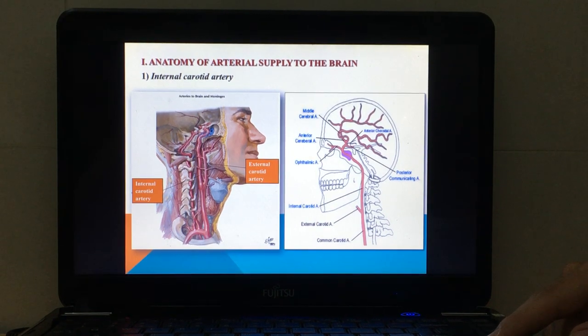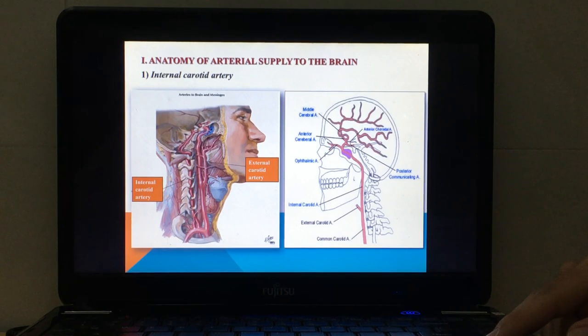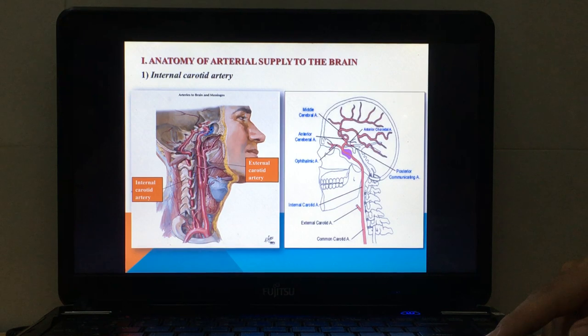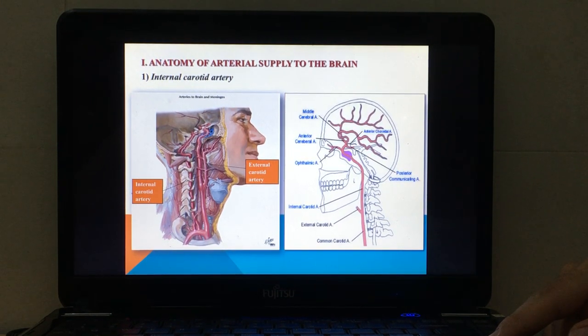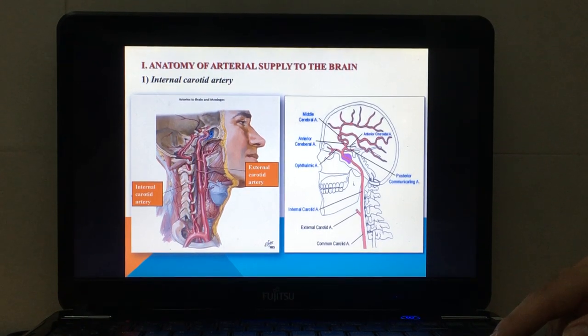These branches are the anterior cerebral artery, the middle cerebral artery, the biggest one, the posterior communicating artery, the anterior choroidal artery in the lateral ventricle, and the ophthalmic artery which supplies the eye.